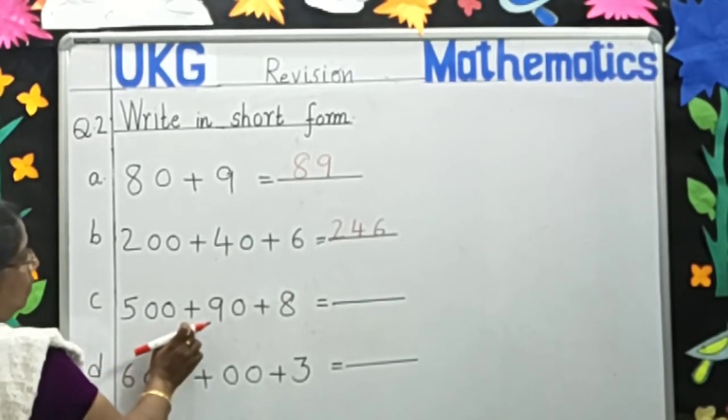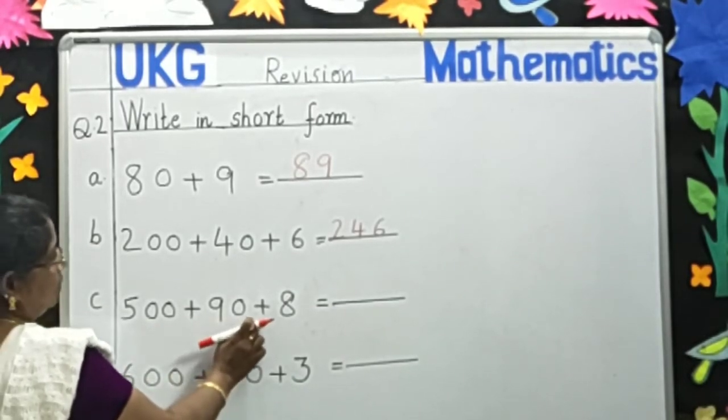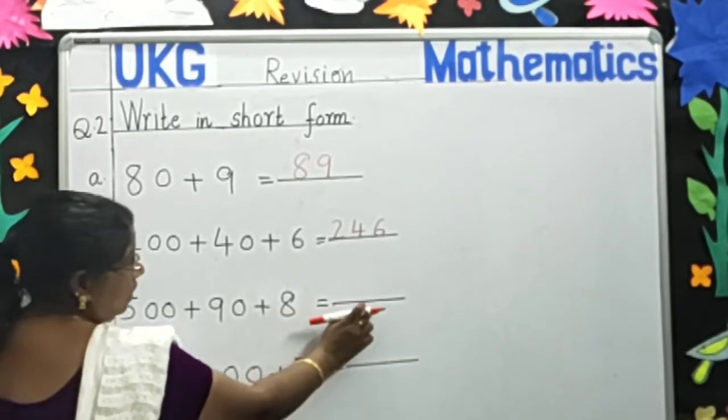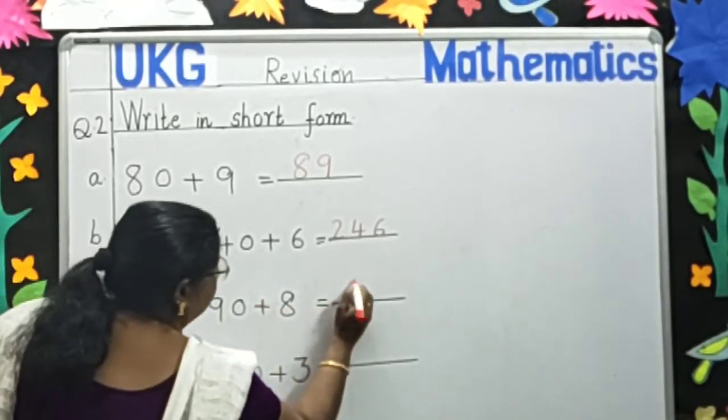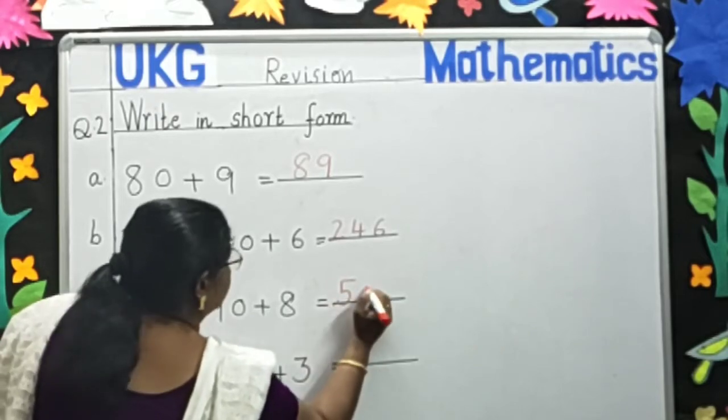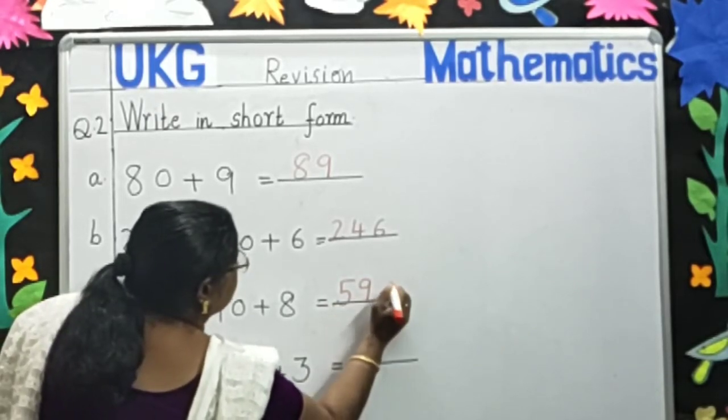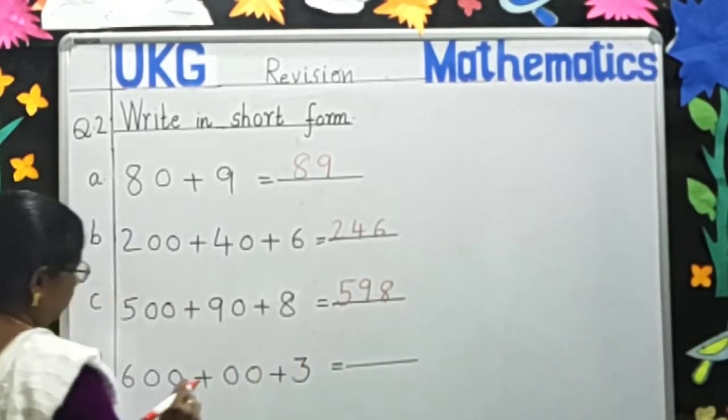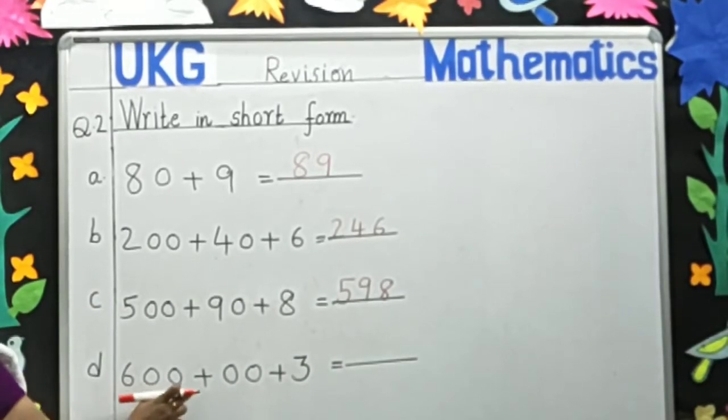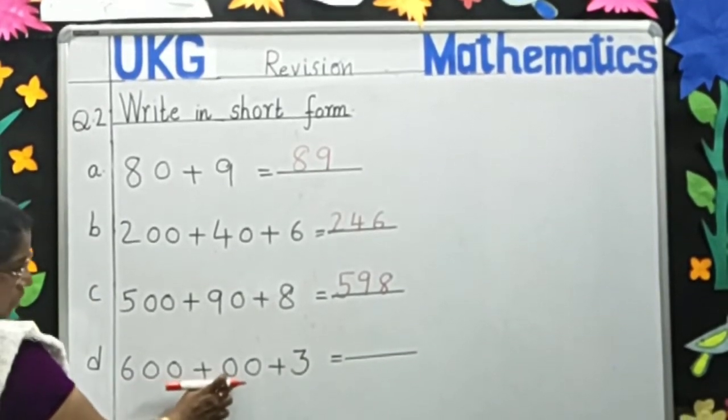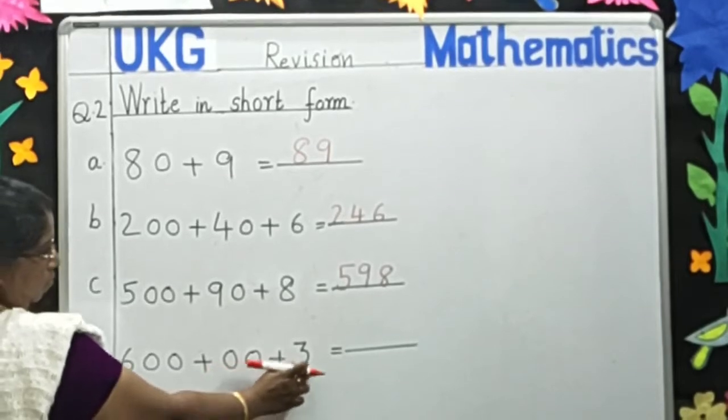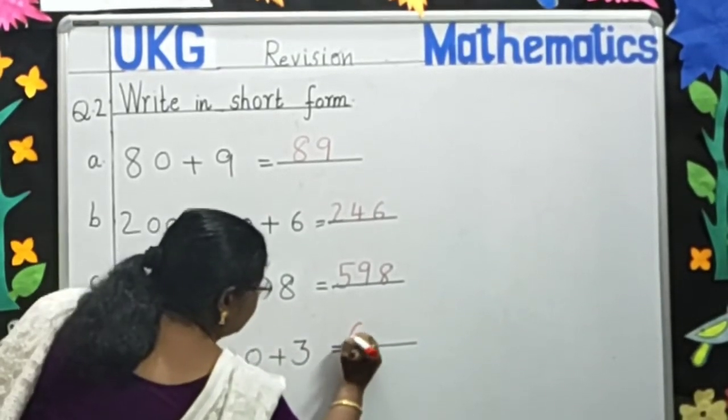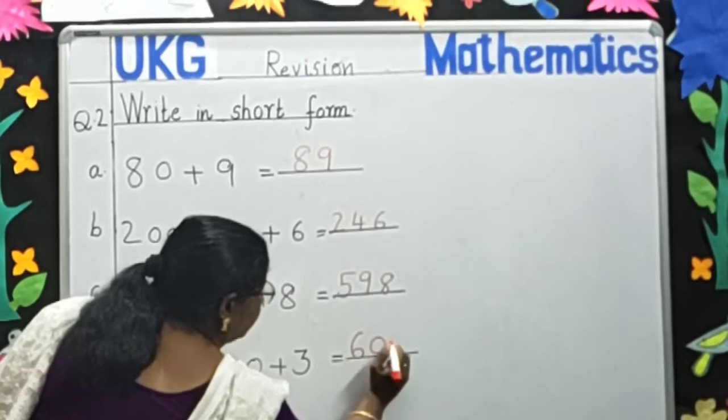500 plus 90 plus 8 is dash, so 598. Next, 600 plus 0 tens plus 3 ones. This is 603.